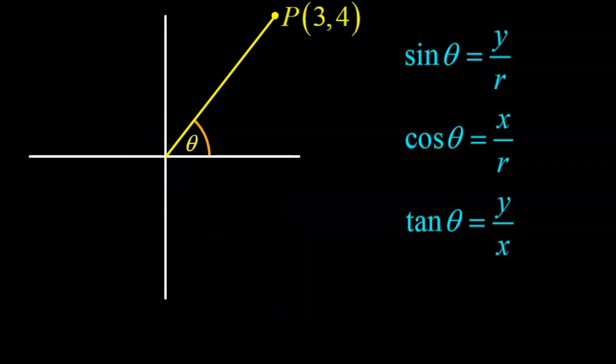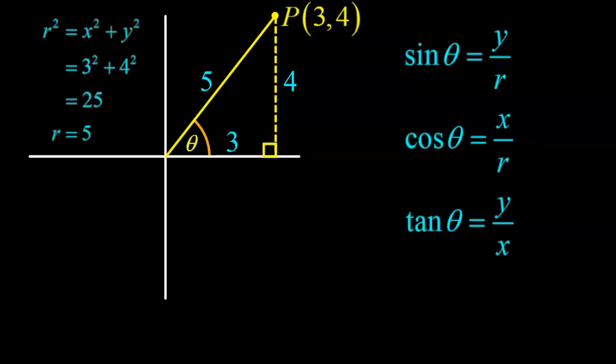Let's do this with a very specific example. Let's say we have a terminal arm that passes through the point 3 comma 4. If that's the case, and I drop the vertical, then I have a right triangle whose dimensions would be base 3, height 4. I can easily use Pythagorean theorem to determine the length of the hypotenuse, or the r value. Here in my calculations, to go from r squared to r, of course use square root. And it's always going to be the principal square root, so it's always positive.